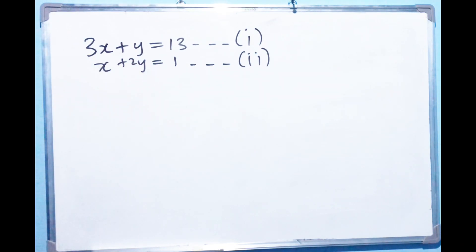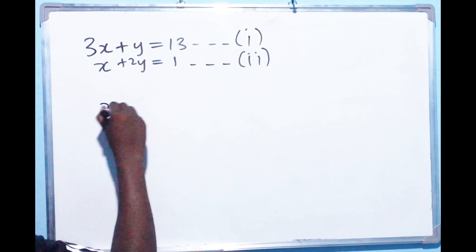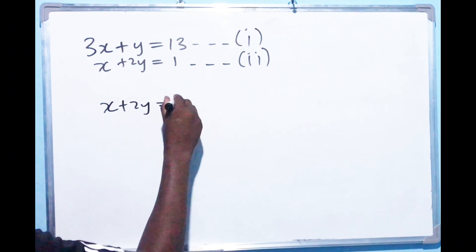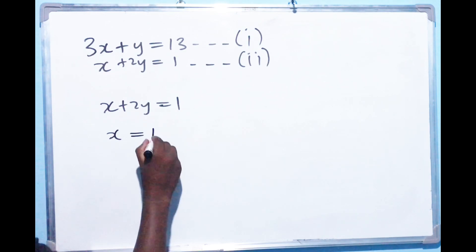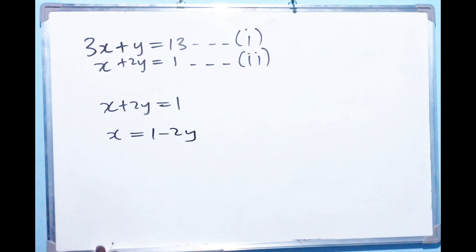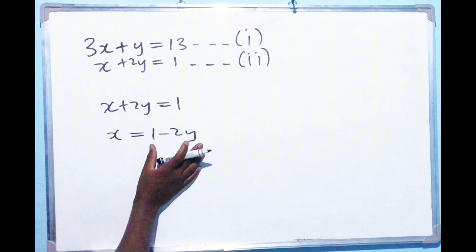We are going to use 2 in this case. So we'll have X plus 2Y equals to 1. We can make X the subject. It's quite easy. So X is already this side. This should be equal to 1 minus 2Y. So we know that X equals to 1 minus 2Y.